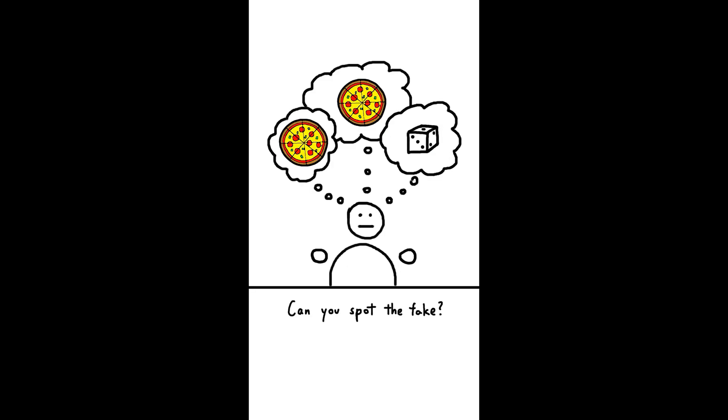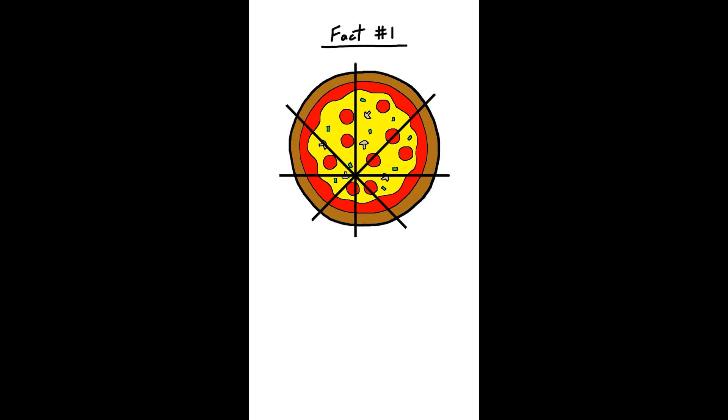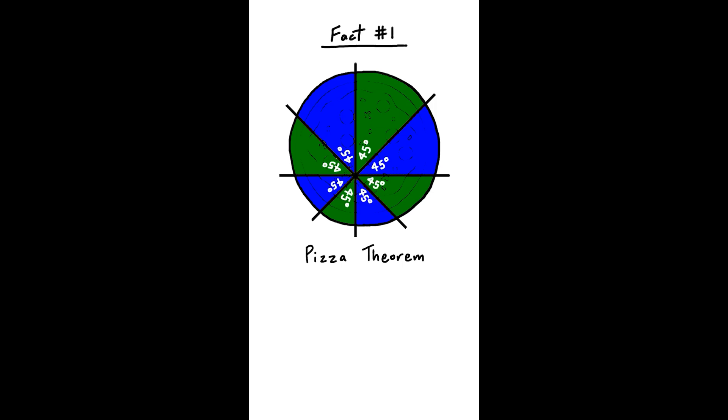Two truths and a lie, but with math, can you spot the fake? First, if you're really bad at cutting pizzas, don't worry. The pizza theorem ensures that these four slices have the same area as the other four slices, provided you made your cuts with equal angles.